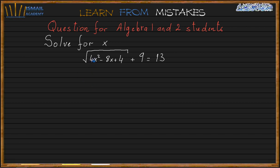First I see that there is 4, 8, 4, which means that we have 4 as a common factor. So I take 4 as a common factor here. So it's going to be 4 times x squared minus 2x plus 1 plus 9 equals 13.